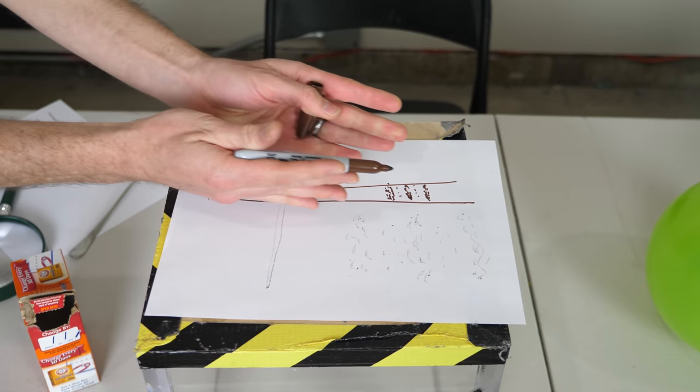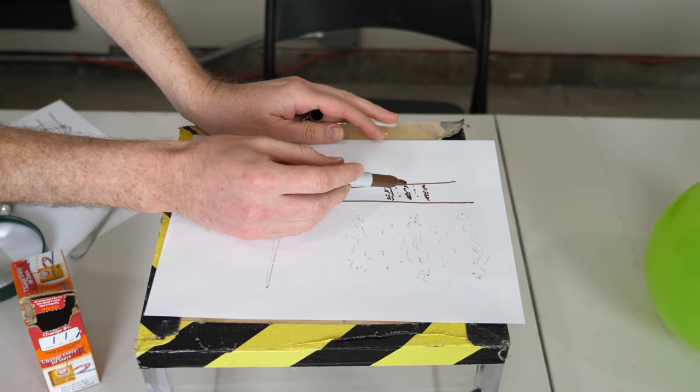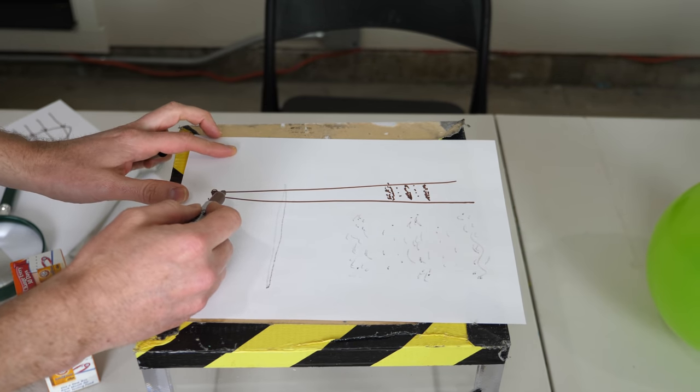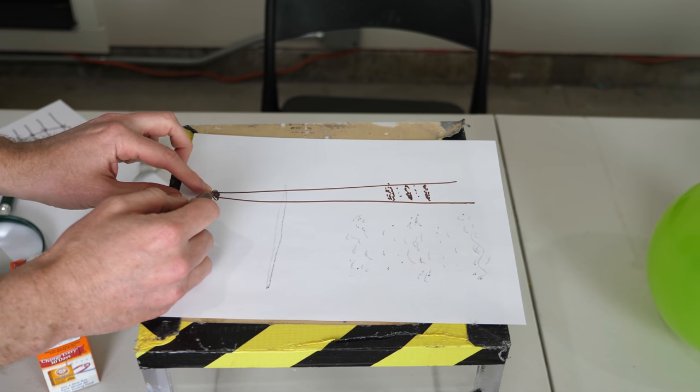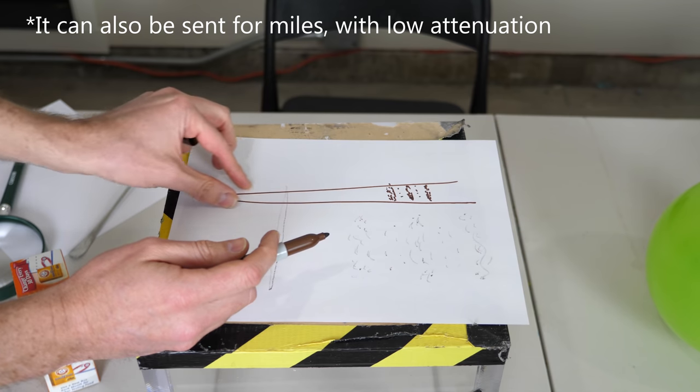And so what happens is wherever you're aiming this ultrasonic beam, you can create these high and low pressure zones that sound like actual sound. And so the sound is not generated from the ultrasonic source at all, but it's generated at every point along the beam here.